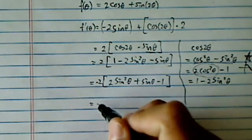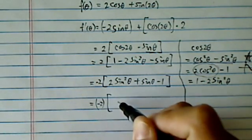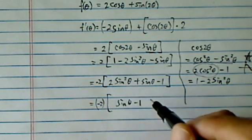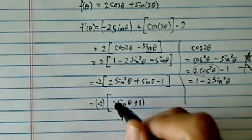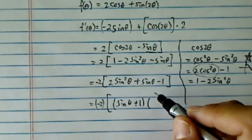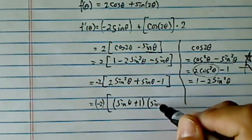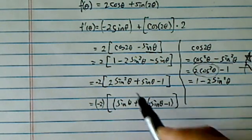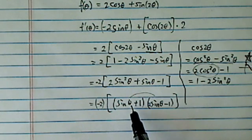So now I'm going to factor over here. So I have minus two, and then sine theta, I have a minus one, or actually this one is plus one. Factor it with sine theta, two sine theta, minus one.